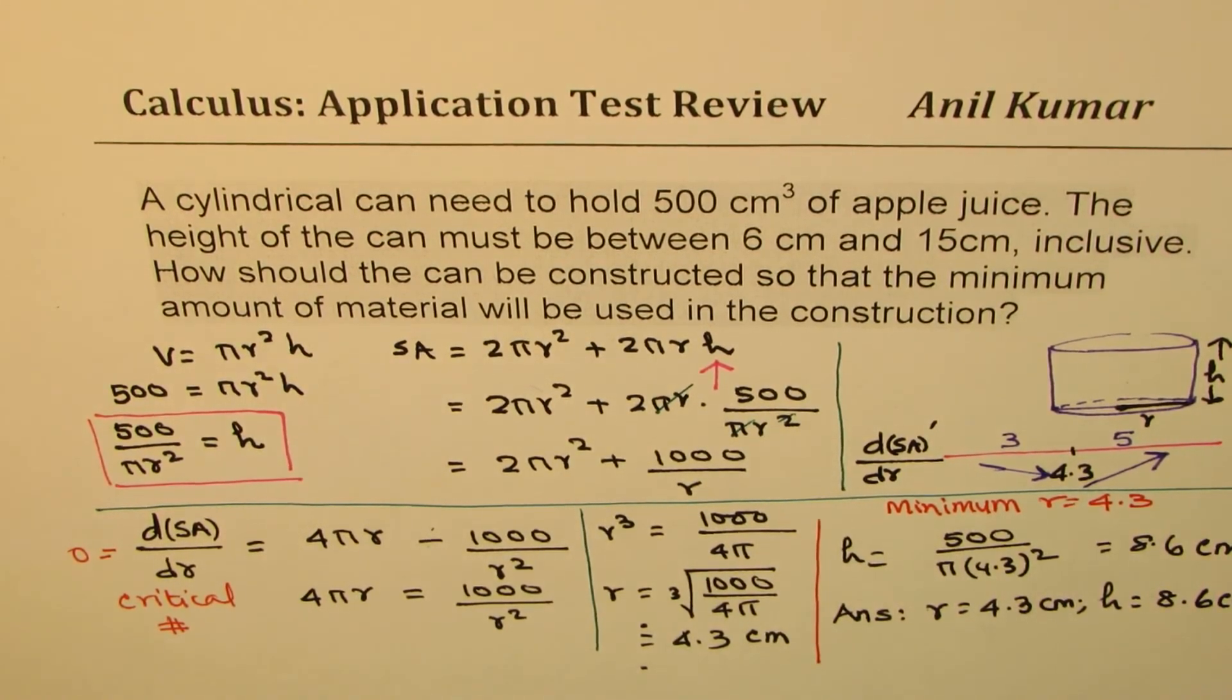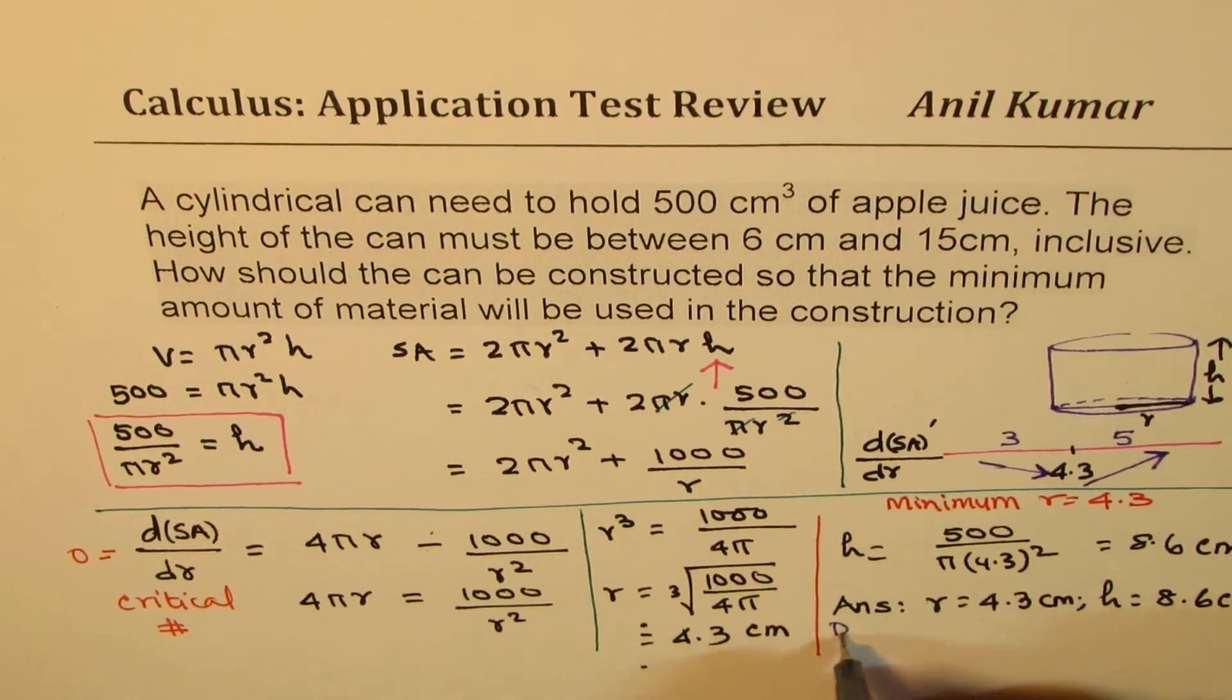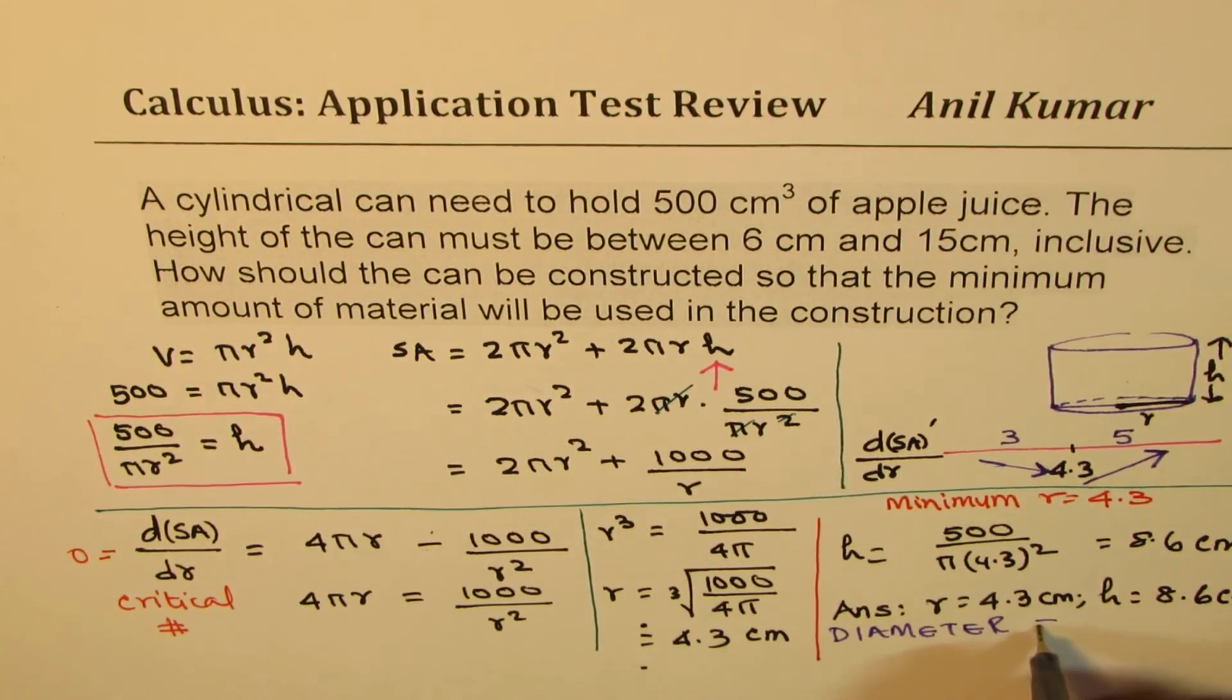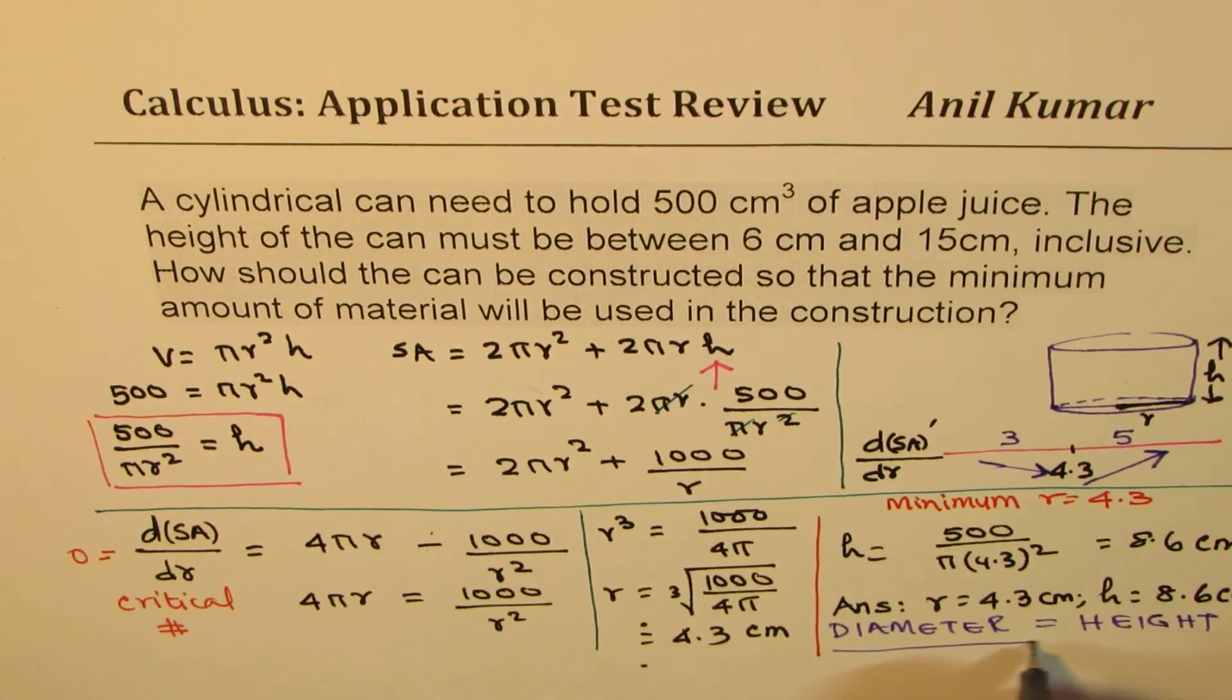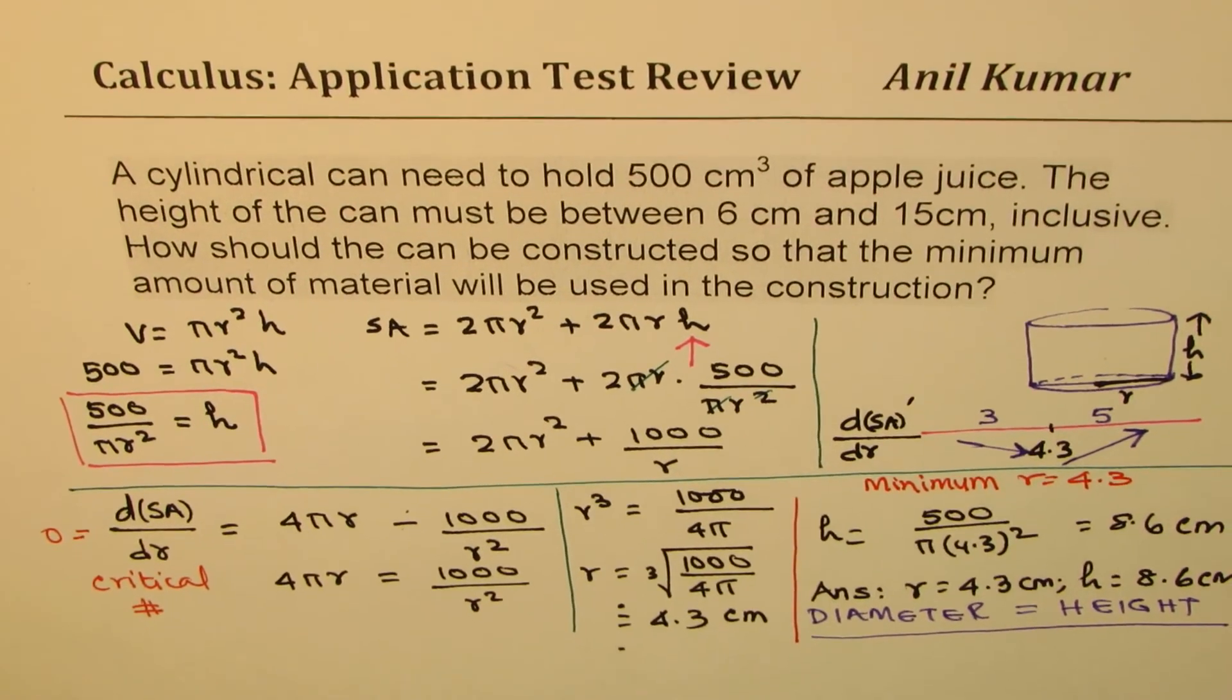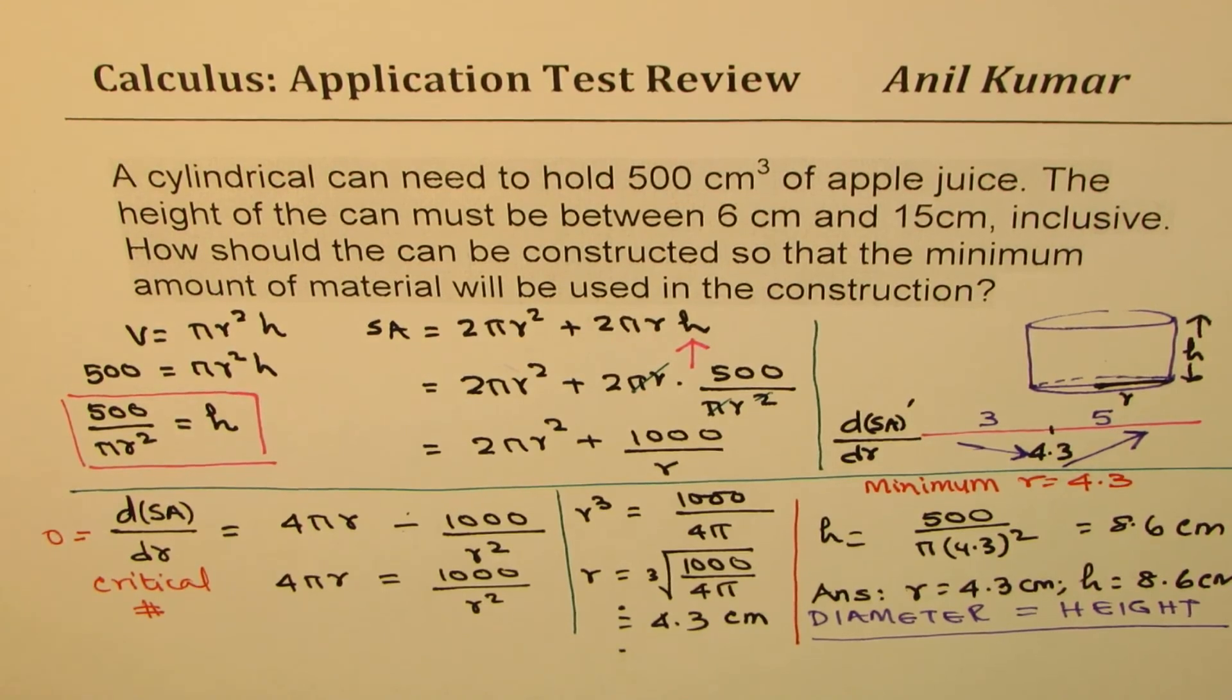Now that is normally the case. So whenever you have such questions on cylinders, note that diameter, which is twice radius, equals height. Now this is a very important conclusion. So if you have a multiple choice question based on cylinders to minimize the cost, that is the best shape. So diameter equals height will give you the most economical can packaging.